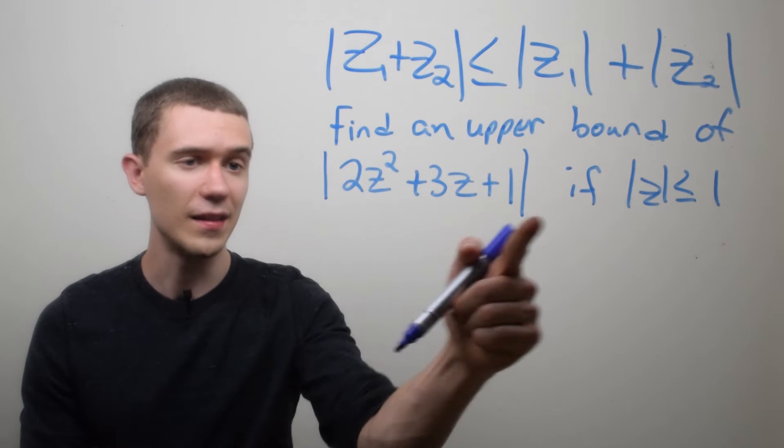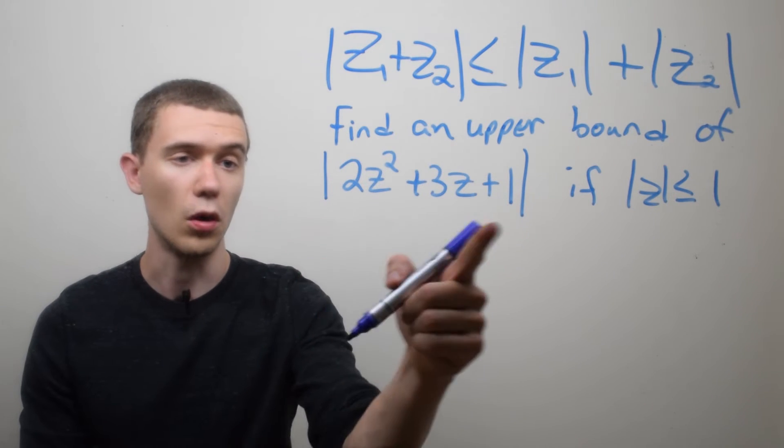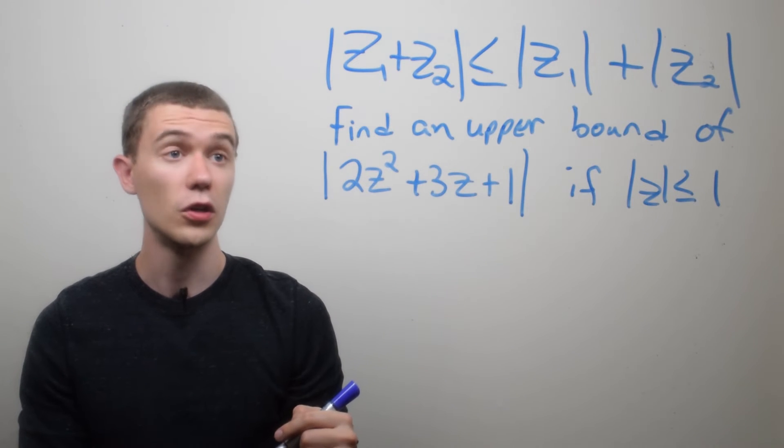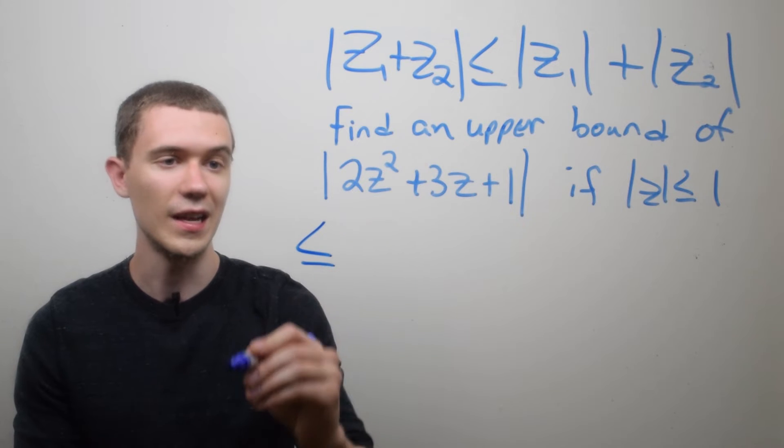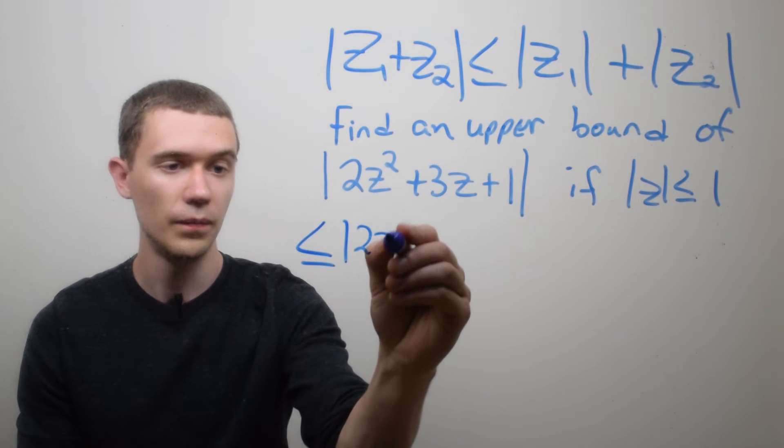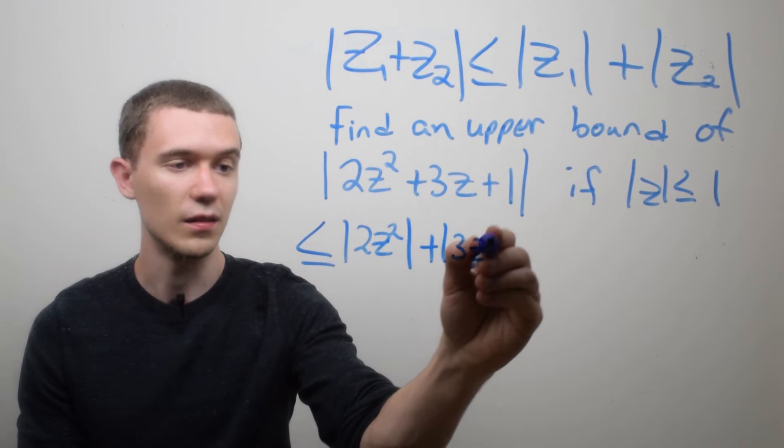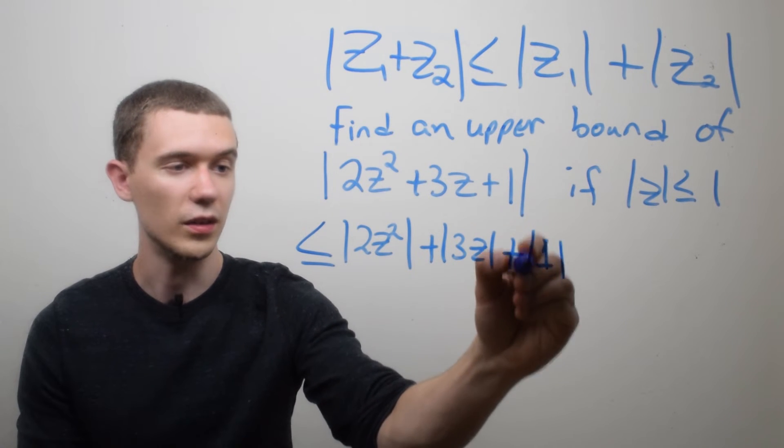So let's take this, and if you think of this as being two separate parts, or even three separate parts, I could just apply this idea two times. So I'm going to say that this quantity is less than or equal to the first one, the 2z squared in modulus, plus the second, the 3z in modulus, plus 1 in modulus.